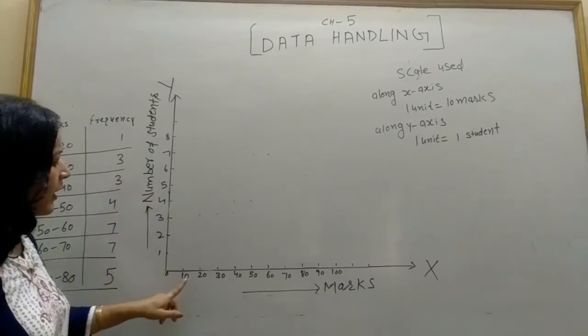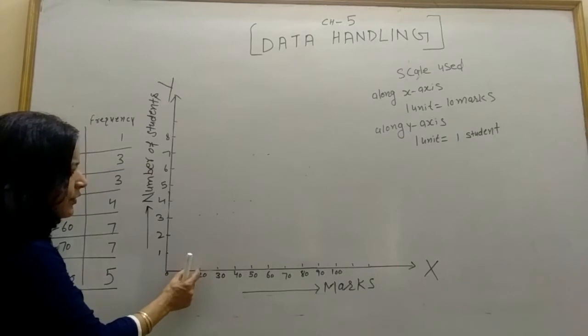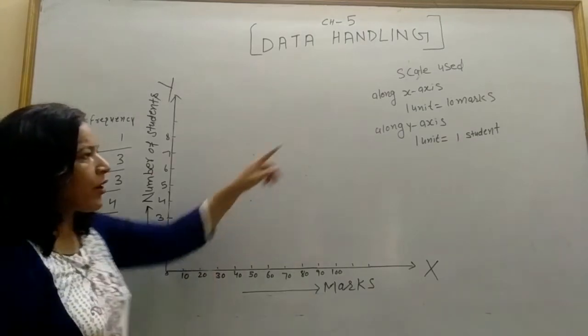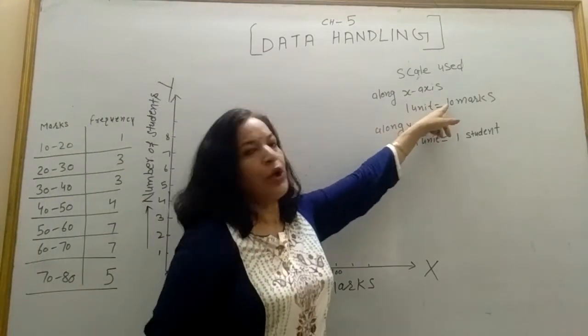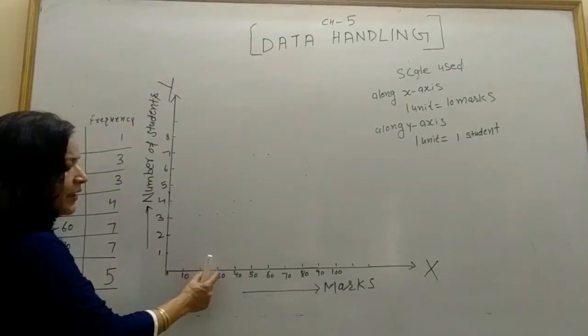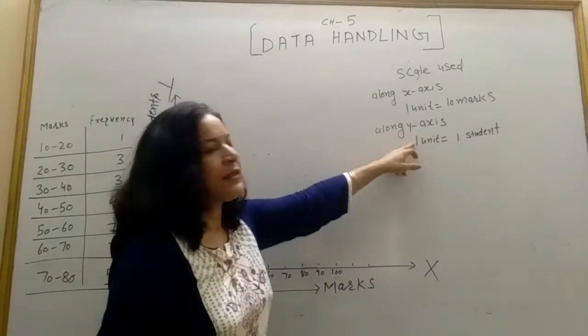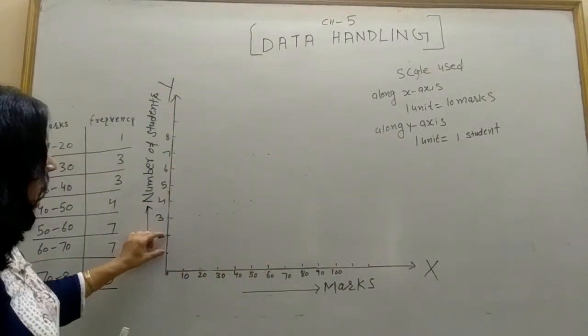Here, the scale used along x-axis is one unit equals 10 marks. And along y-axis, one unit equals one student. Clear? So from the data...